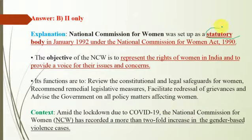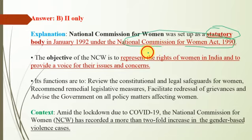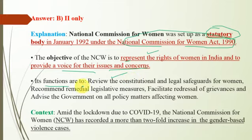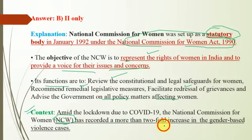Statement 1 is incorrect because the National Commission for Women is a statutory body, not a constitutional body. It was set up under the National Commission for Women Act, 1990. Its objective is to represent the rights of women in India and provide a voice for their issues. Functions include reviewing constitutional and legal safeguards for women, recommending remedial legislative measures, facilitating redressal of grievances, and advising the government on all policy matters affecting women. The context is that under lockdown, the NCW recorded a more than two-fold increase in gender-based violence cases.